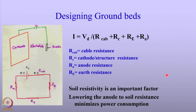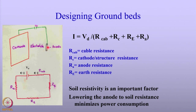Before we go into details of designing the ground bed, I would like to draw attention to the diagram shown on the left side of the slide. What is shown here is the cathode representing the pipeline, and the anode. The size of the anode is very small relative to the cathode — in fact they are like a point. So the current density leaving the anode is quite significant, and as a consequence there will be a huge potential drop from the anode to the soil.